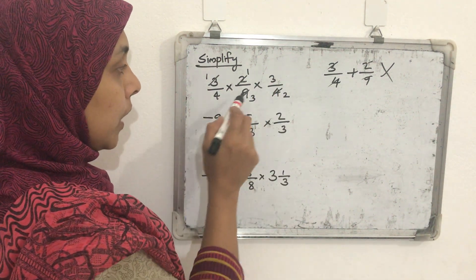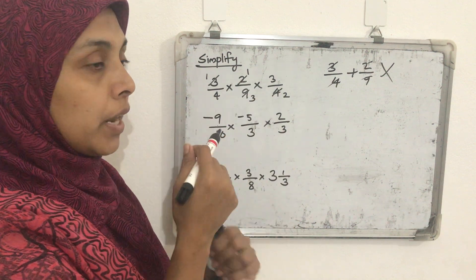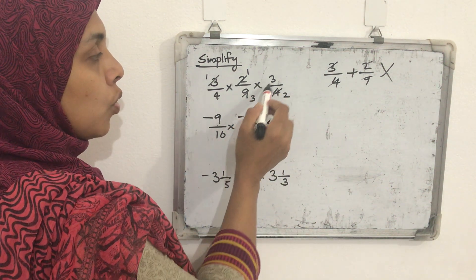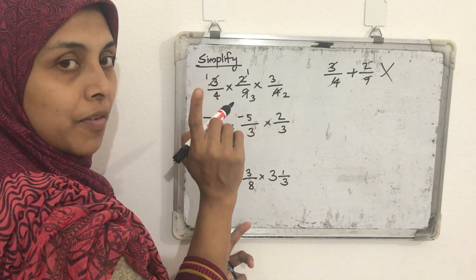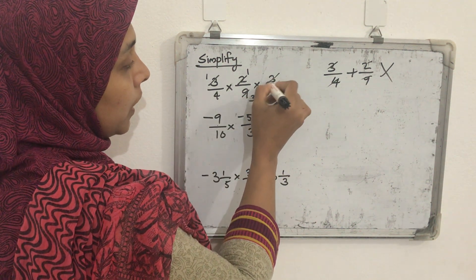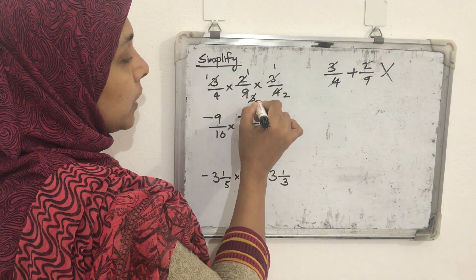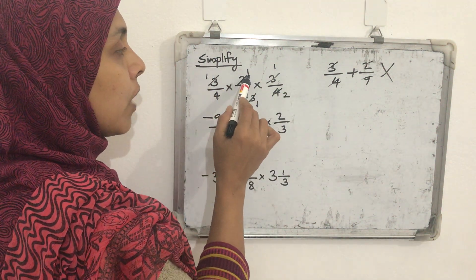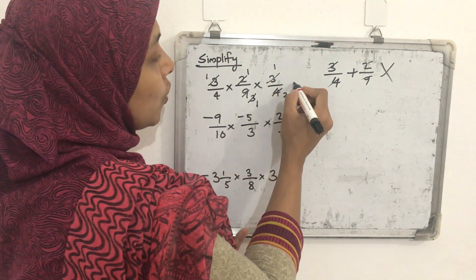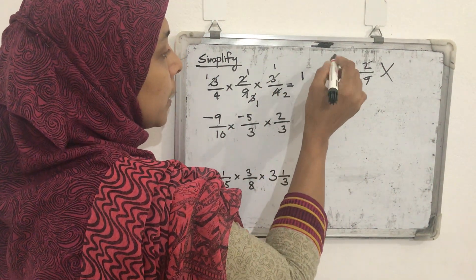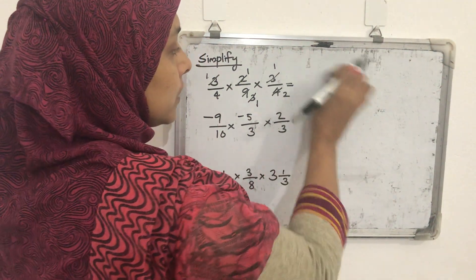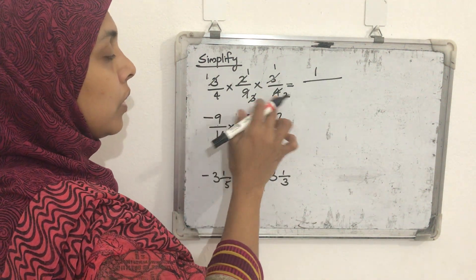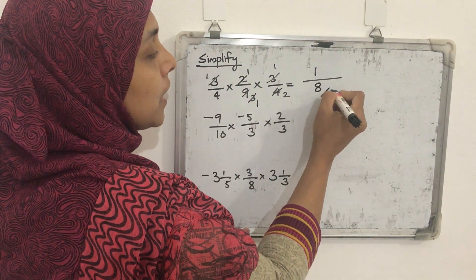Now check if any remaining numerator and denominator share a common factor. Here we see 3 and 3 — both numerator and denominator have the common factor 3. Dividing both by 3 gives 1 and 1. The numerators are now 1 × 1 × 1 = 1. The denominator is 4 × 1 × 2 = 8. So the answer is 1/8.